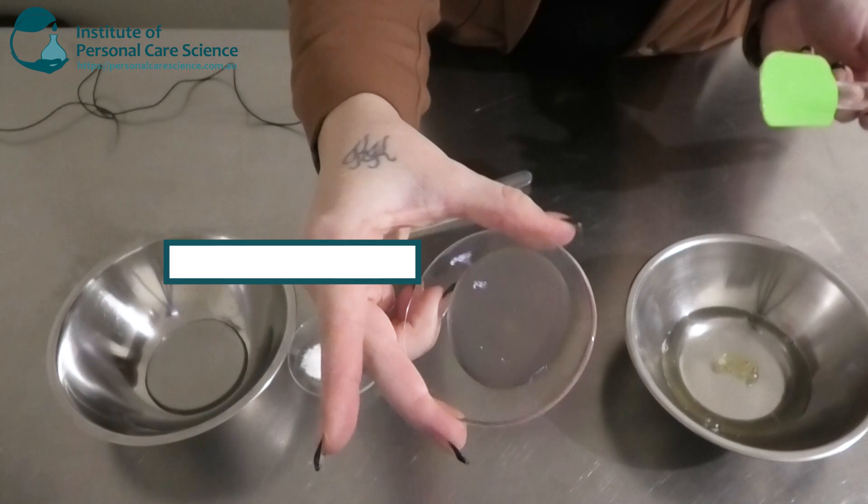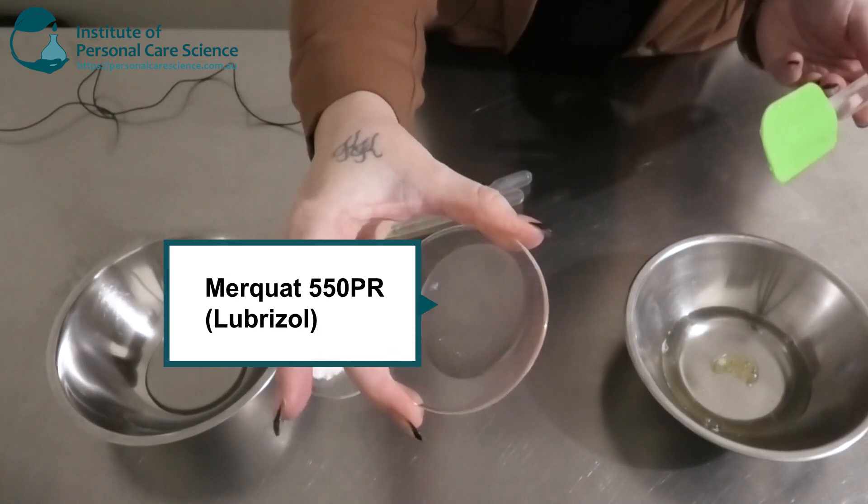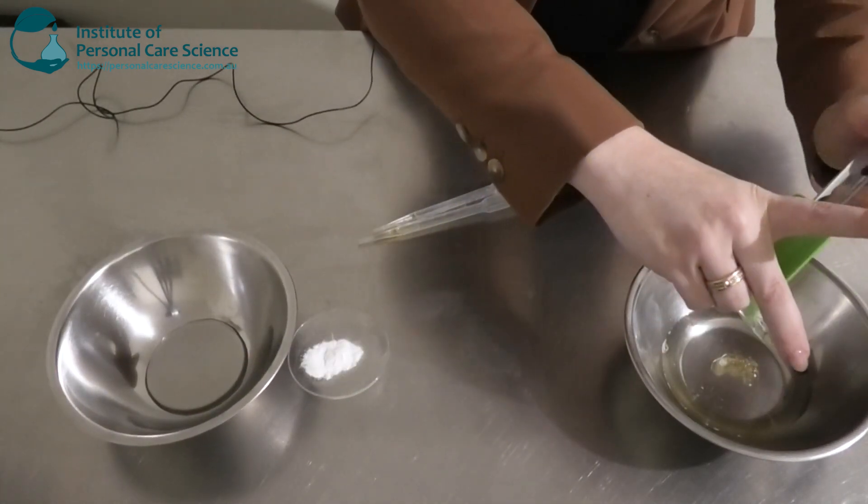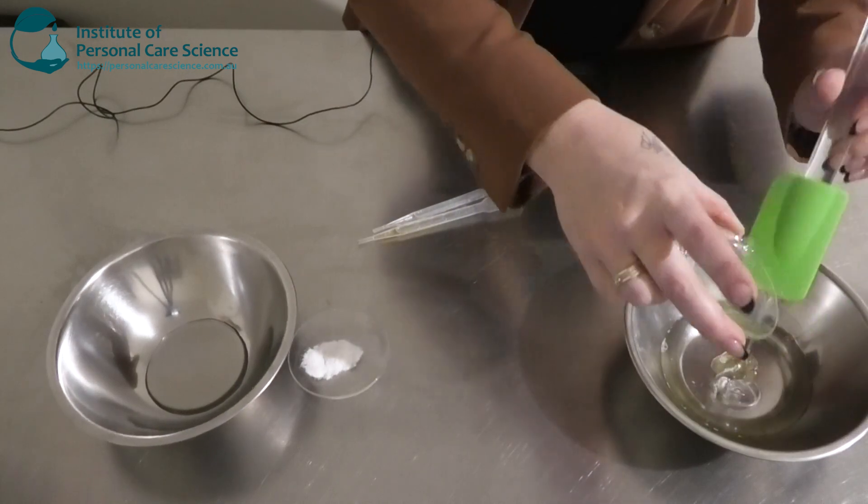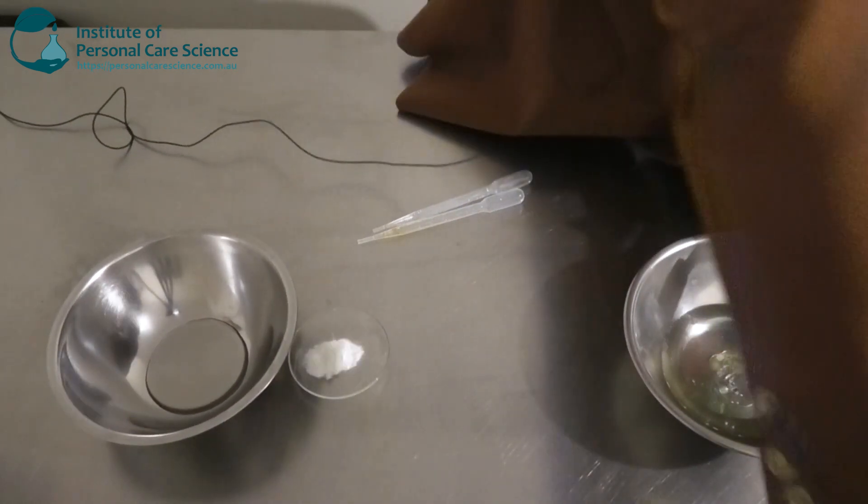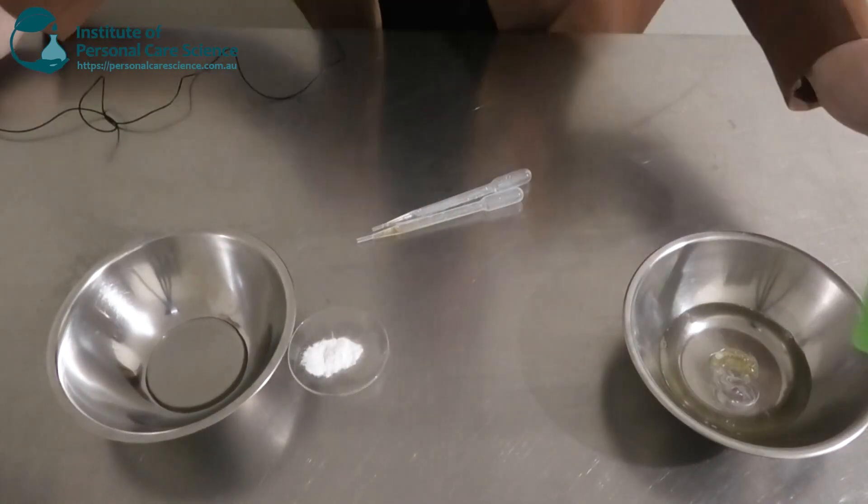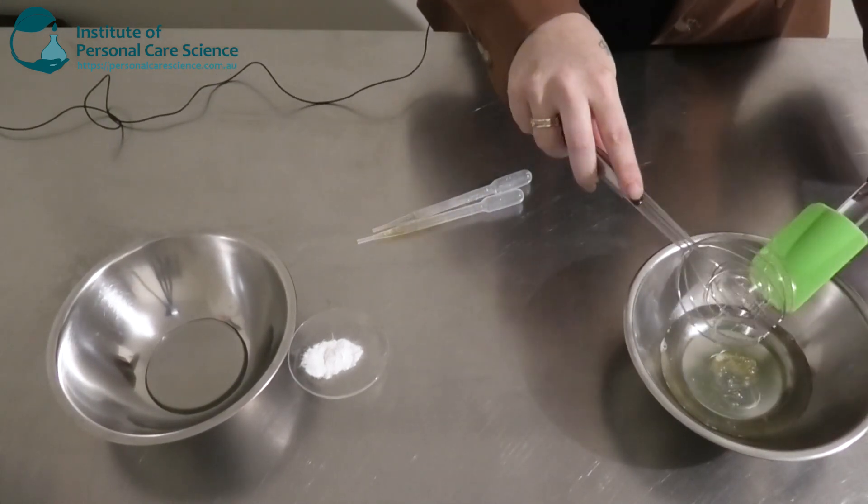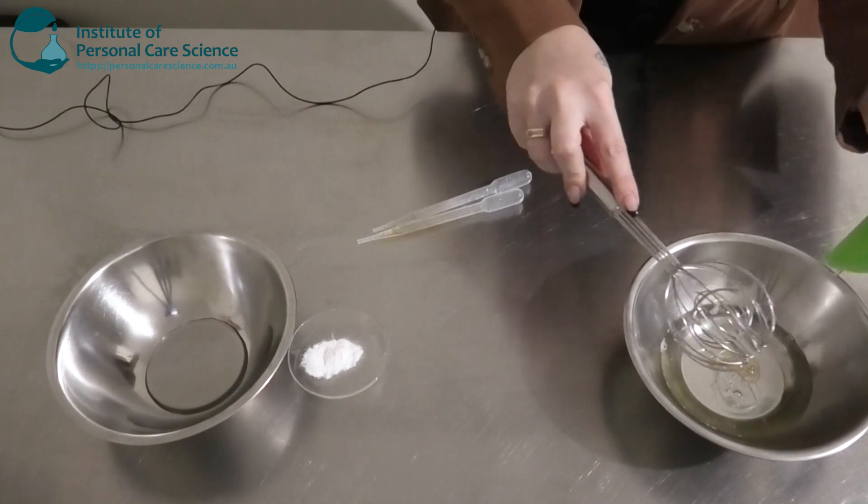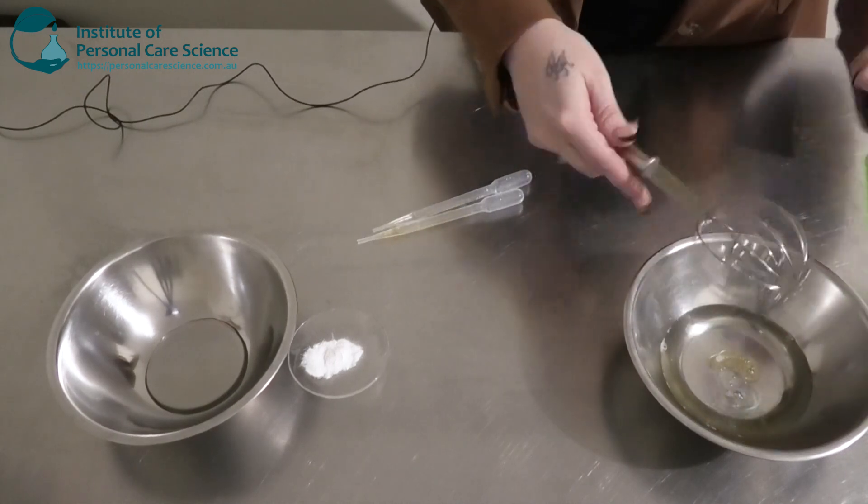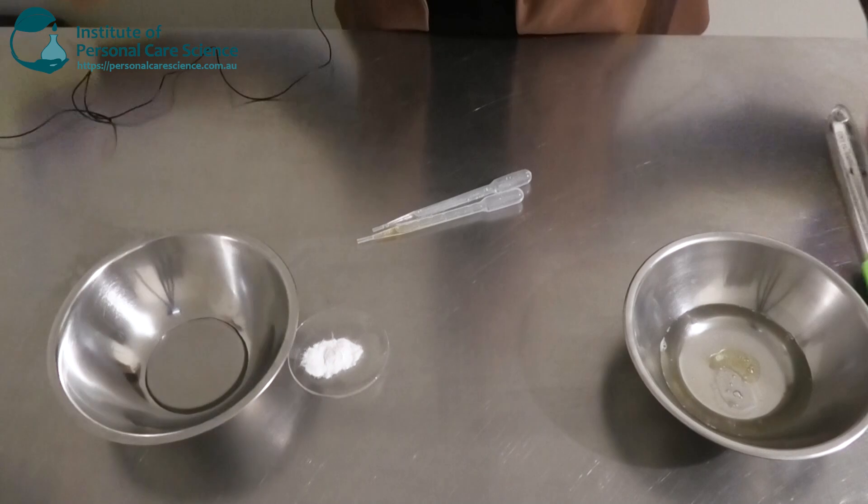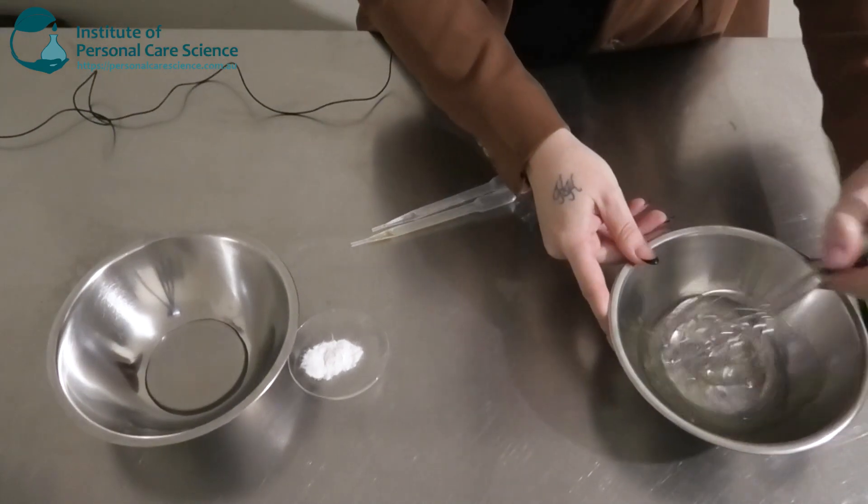I'm also adding a high input of Merquot 550 PR, which is polyquaternium 7. This will help condition the skin and also help with mildness. We're using it at a high input because it is a concentrate - you want to make sure with each pump or application you're getting enough of each ingredient. Now we'll give that a stir.